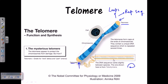This sequence is somewhat fixed but slightly varied between species. As you can see here, the sequence from Tetrahymena is slightly different from the human sequence, but they all share the concept of having a repeated sequence across different species.